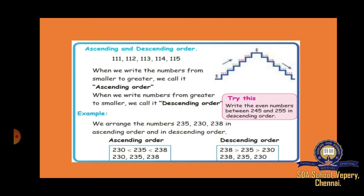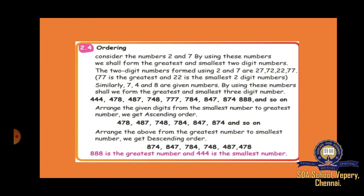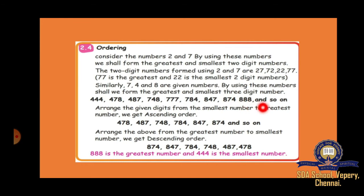Next, ascending and descending order. Ascending means from small number to big number. Descending means from big number to small number. Next, ordering — three digit numbers will be given, and you have to combine the numbers to form a greater three digit number and a smaller three digit number.